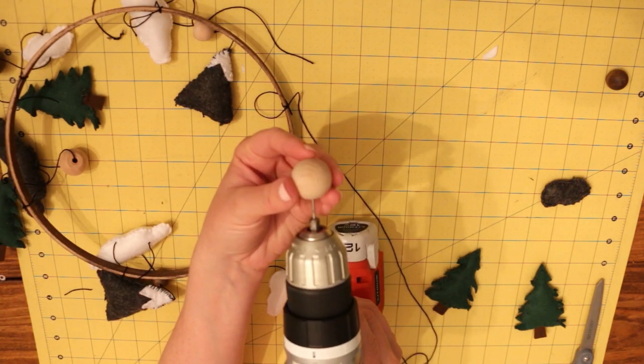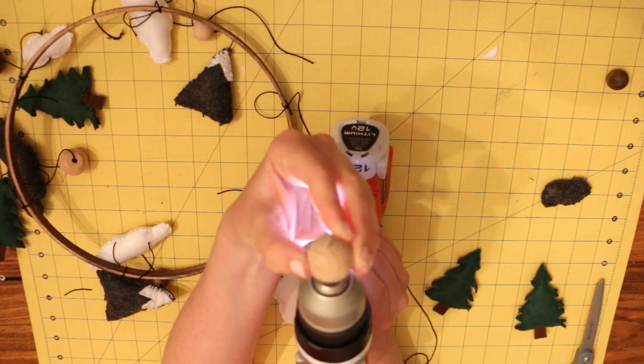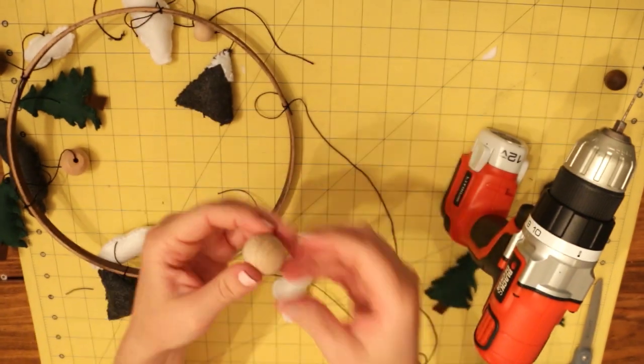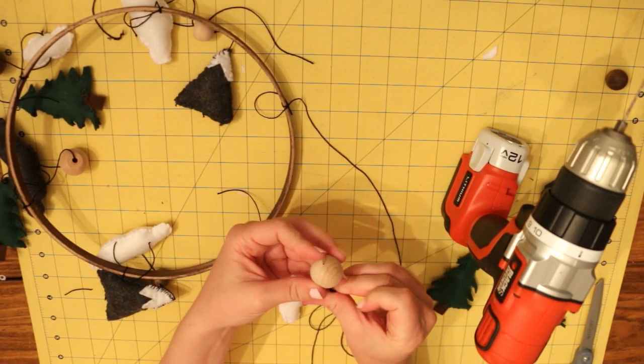The wooden ball knobs I had only had a hole on one side, so using a drill, I drilled through the ball completely, and then I strung it through the black string.